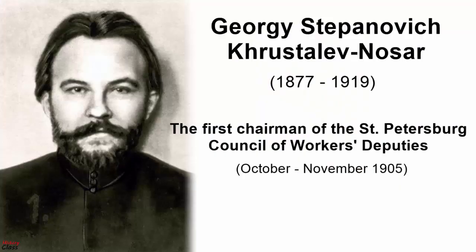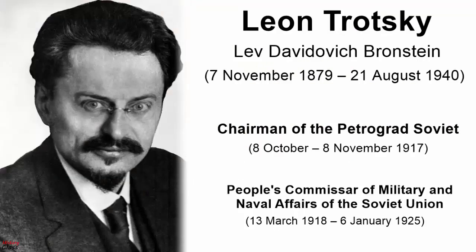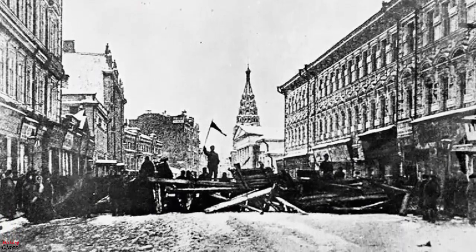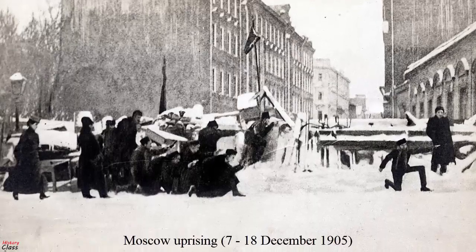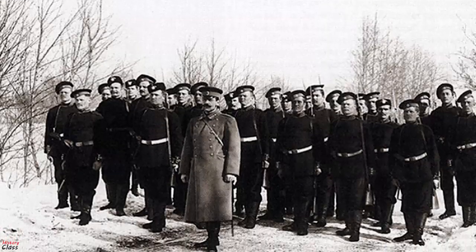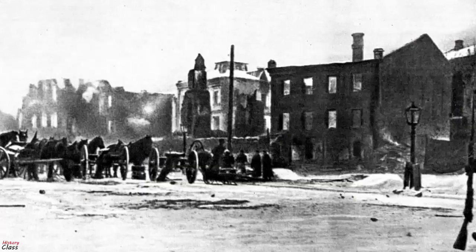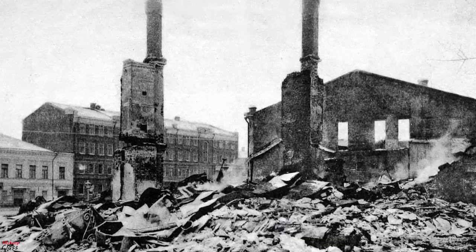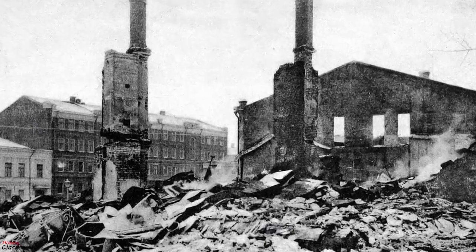At the end of November, the government arrested the Soviet's chairman, the Menshevik Georgi Stepanovich Krustalyev-Nosar, and in December occupied its building and arrested Leon Trotsky and others. Between 5 and 7 December, there was a general strike by Russian workers in Moscow. The government sent troops on 7 December, and a bitter street-by-street fight began. A week later, the Semyonovsky regiment was deployed and used artillery to break up demonstrations and to shell workers' districts.